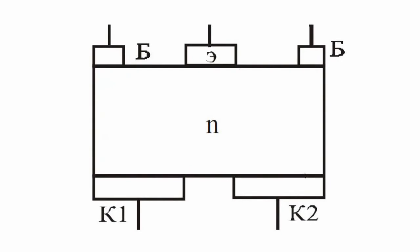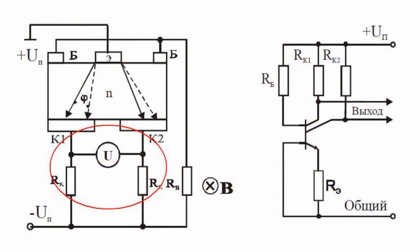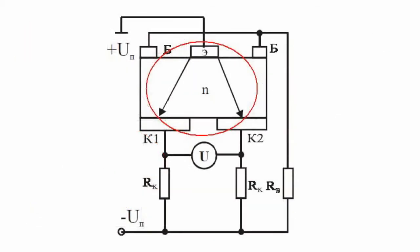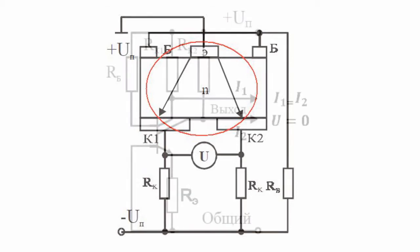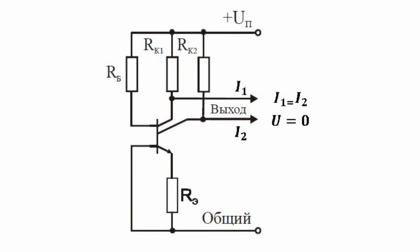The operation principle of a bi-collector magneto-transistor is the following. When a BMT is connected with a common emitter and load resistors RK, the collectors appear to be connected into a bridge circuit. When there is no magnetic field, the charge carriers, the holes guided by the emitter, are almost evenly distributed between the collectors. The current of collectors 1 and 2 is equal and there is no voltage between them.